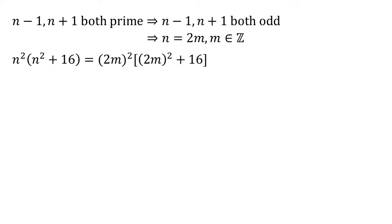Substituting this into our expression we have 2m all squared times 2m all squared plus 16 which becomes 4m squared times 4m squared plus 16. We can factorize out the 4 from those brackets to give 16m squared times m squared plus 4. Hence our n squared n squared plus 16 must be a multiple of 16.